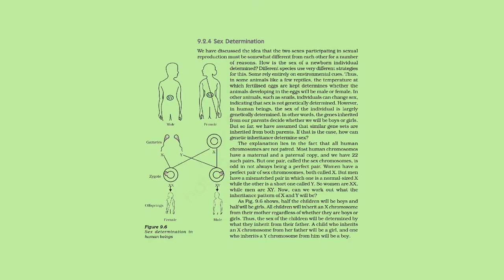9.2.4 Sex Determination. Two sexes participating in sexual reproduction must be somewhat different from each other. How is the sex of a newborn individual determined? Different species use very different strategies. Some rely entirely on environmental cues — in some reptiles, the temperature at which fertilized eggs are kept determines whether the animals will be male or female. In other animals such as snails, individuals can change sex, indicating that sex is not genetically determined. However, in human beings, the sex of the individual is largely genetically determined — the genes inherited from our parents decide whether we will be boys or girls.